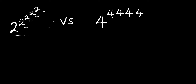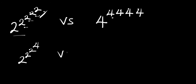Whenever you have an exponential problem of this nature, you simply start from the top two numbers. Here we have two raised to the power of two, so we can rewrite this as two power two power two. Then two raised to the power of two is four, so we have power four on this side.